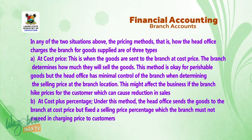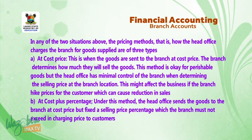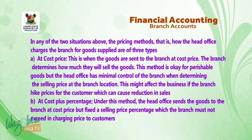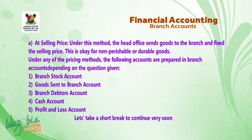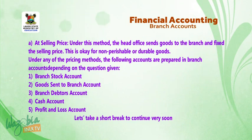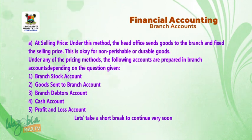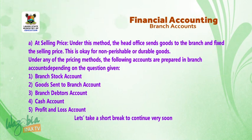The second method is at cost plus percentage. Under this method, the head office sends goods to the branch at cost price but fixes a selling price percentage which the branch must not exceed when charging customers. The third method is at selling price, where the head office sends goods to the branch and fixes the selling price outright. This method is suitable for non-perishable or durable goods.